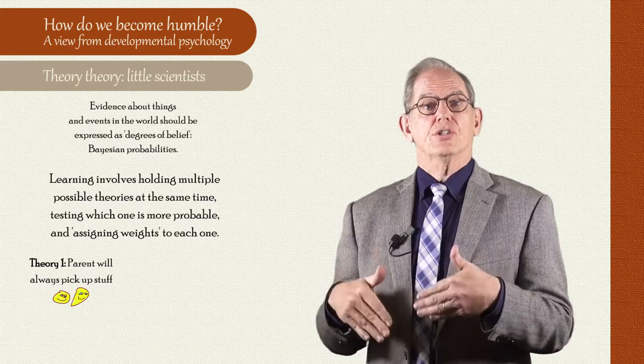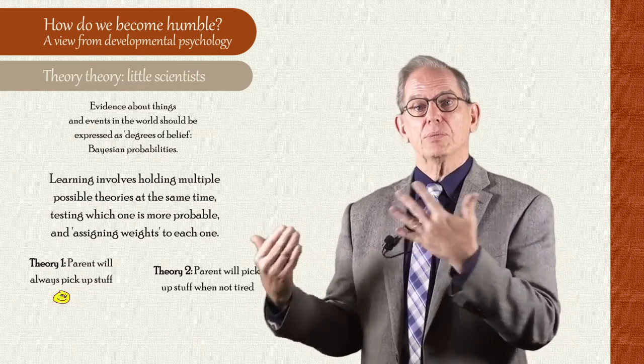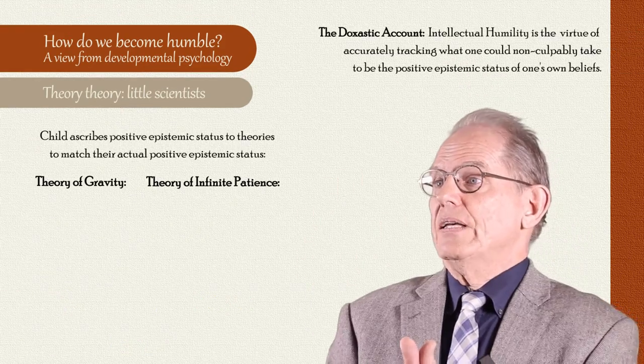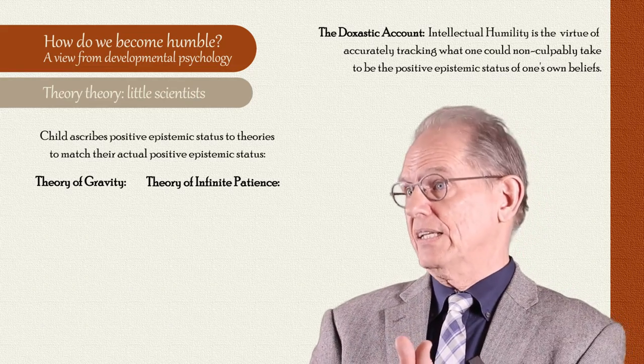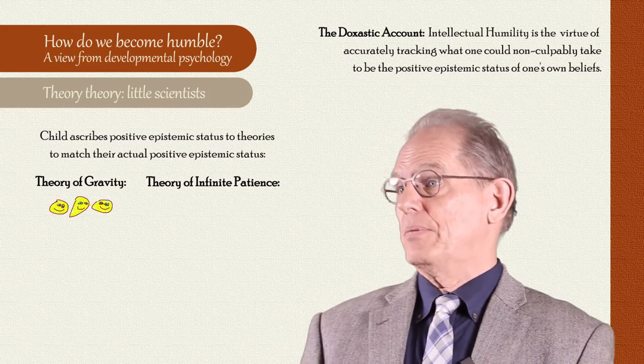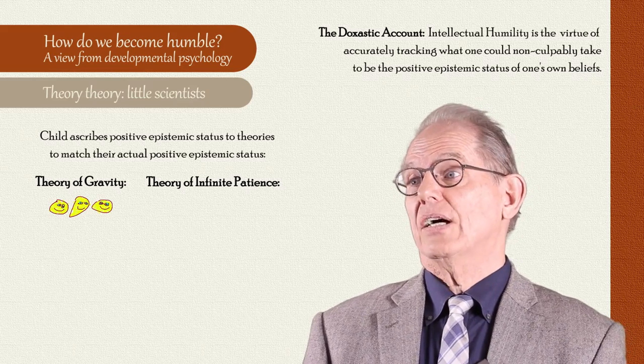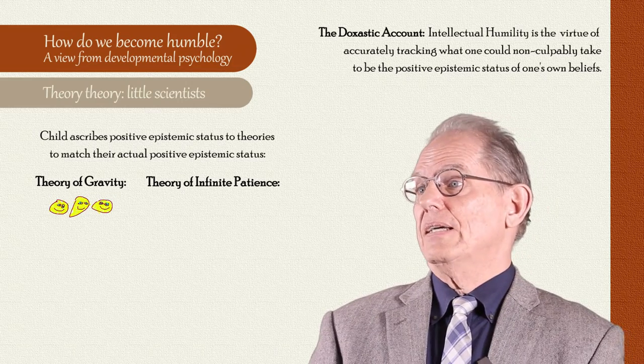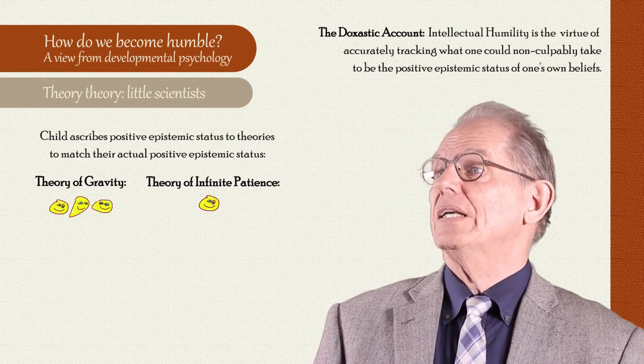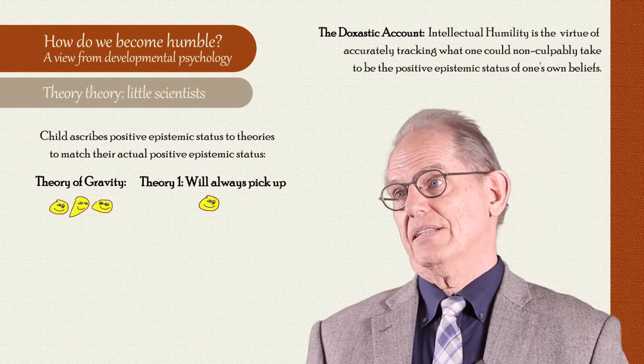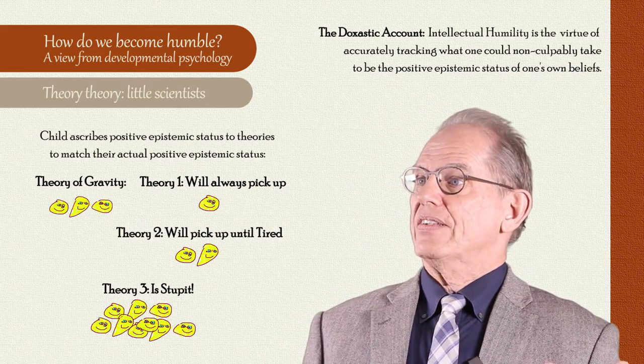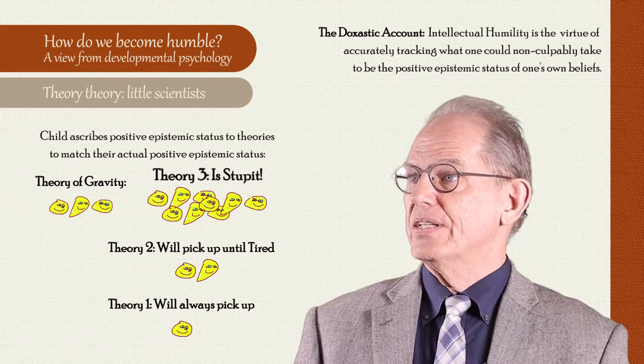In the course of theory change, children gradually change the probability of multiple hypotheses rather than simply rejecting or accepting a single hypothesis. This way of thinking about knowledge acquisition fits well with the doxastic account of Dr. Church's just outlined. Returning to our example, the child in the high chair assigns a high probability to the theory of gravity and we might say the child values this hypothesis highly, whereas the child might assign hypothesis that the adult will always pick up the object with less weight and even begin to form alternative hypotheses to explain why the adult is inconsistent. Maybe the adult gets tired or maybe the adult is stupid and hold both of these hypotheses at once and begin to value one over the other as experience dictates.